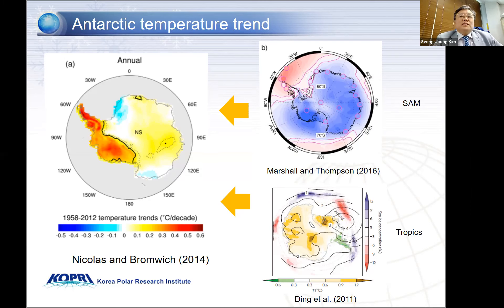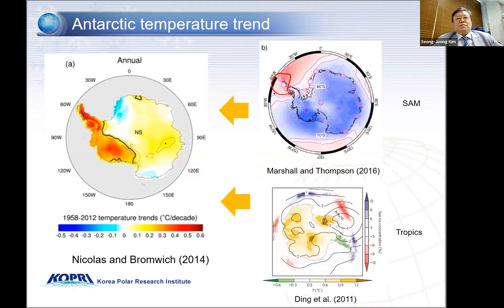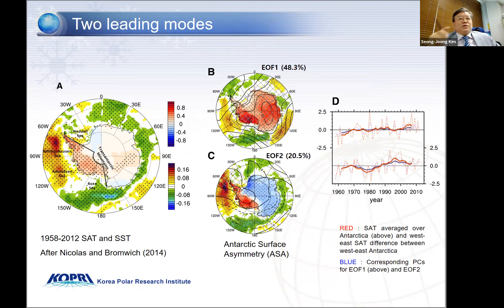When the SAM is in a positive phase, it gives some warm anomaly over the Antarctic Peninsula and cold anomaly over the rest of Antarctica. But as you compare, this doesn't match very well. Ding et al. attributed this to some teleconnection from the tropics, the equatorial Pacific. But the Pacific contribution has some limitation in illustrating the warming of the Antarctic Peninsula, and there are some different results in East Antarctica. So from this motivation, we tried to illustrate what caused this kind of East-West climate asymmetry.